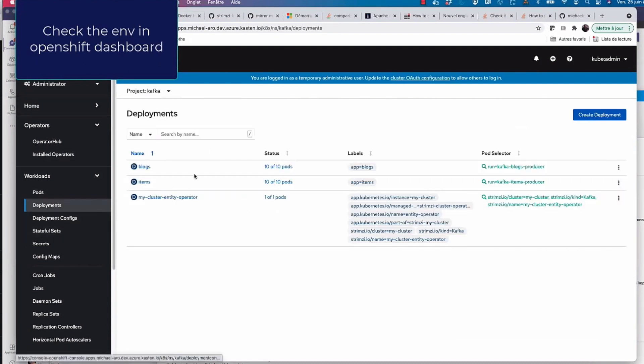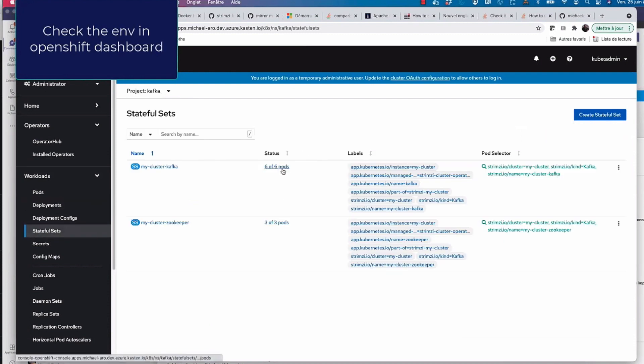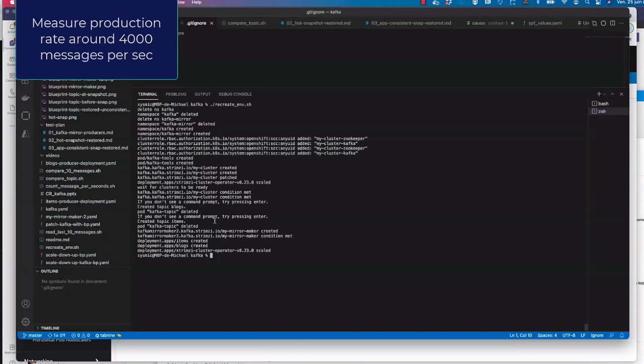And I have my blogs and my items producer. I'm producing messages and I'm producing a lot of messages. So that's what I'm going to demonstrate very soon. I have my StatefulSet which is the representation of my Kafka cluster. So it's six pods of brokers and three Zookeepers. So that makes a total of 600 gigabytes.